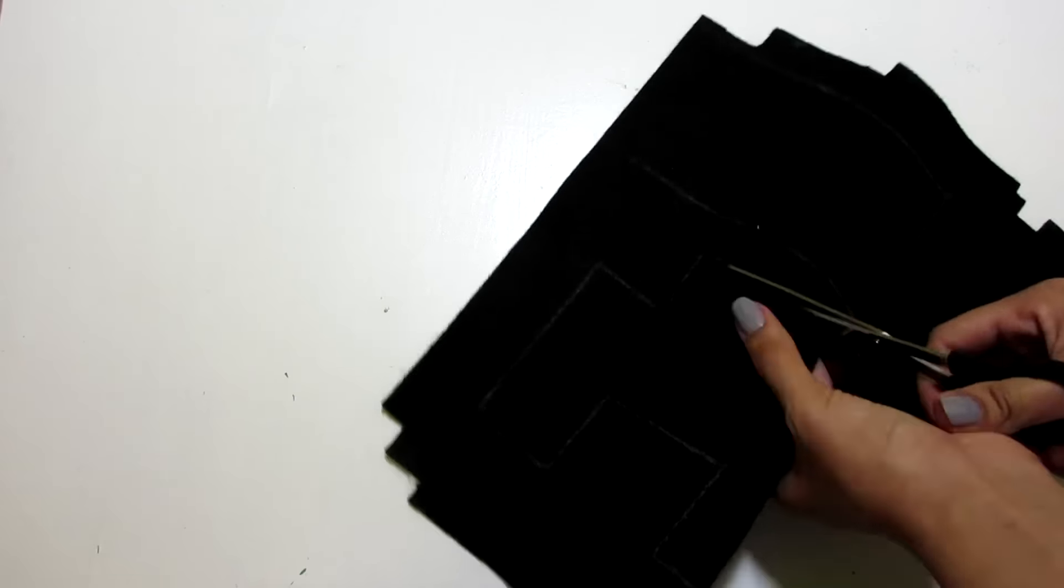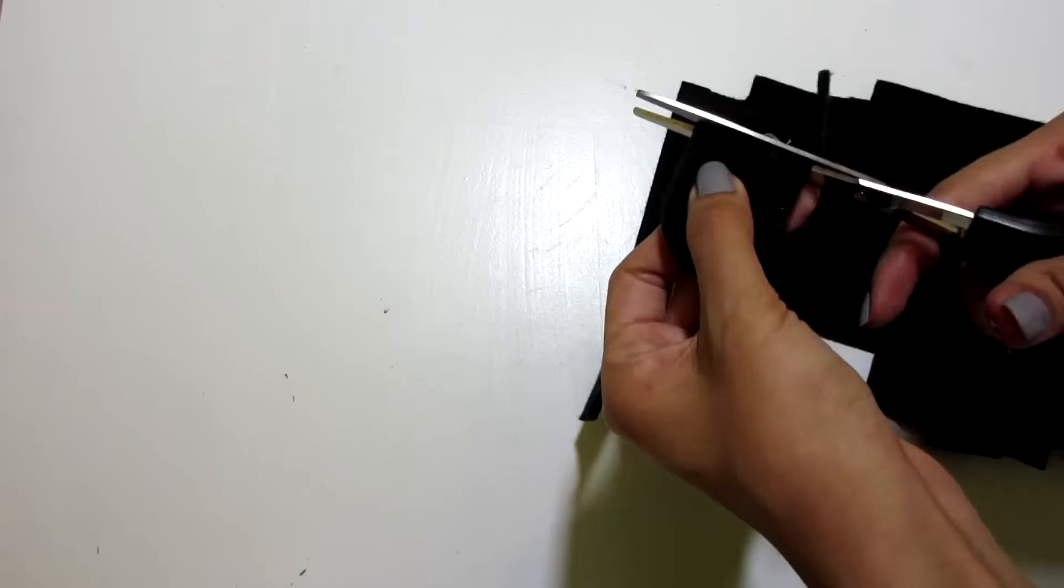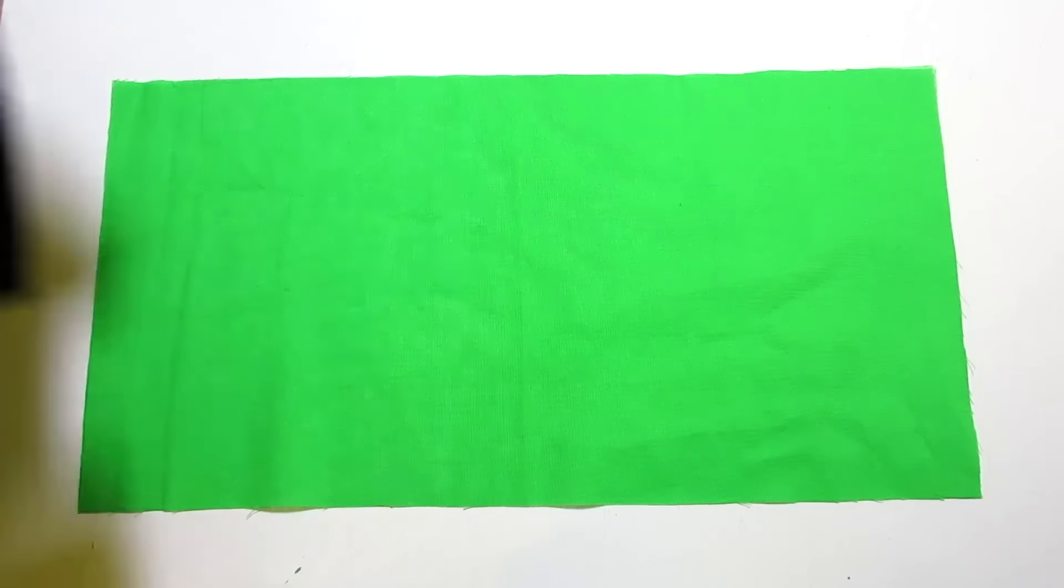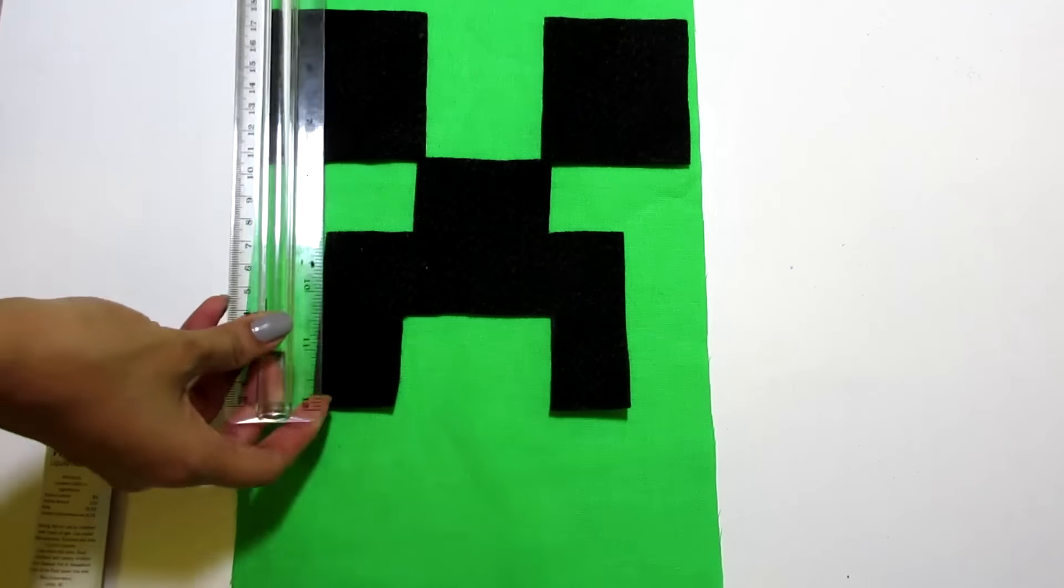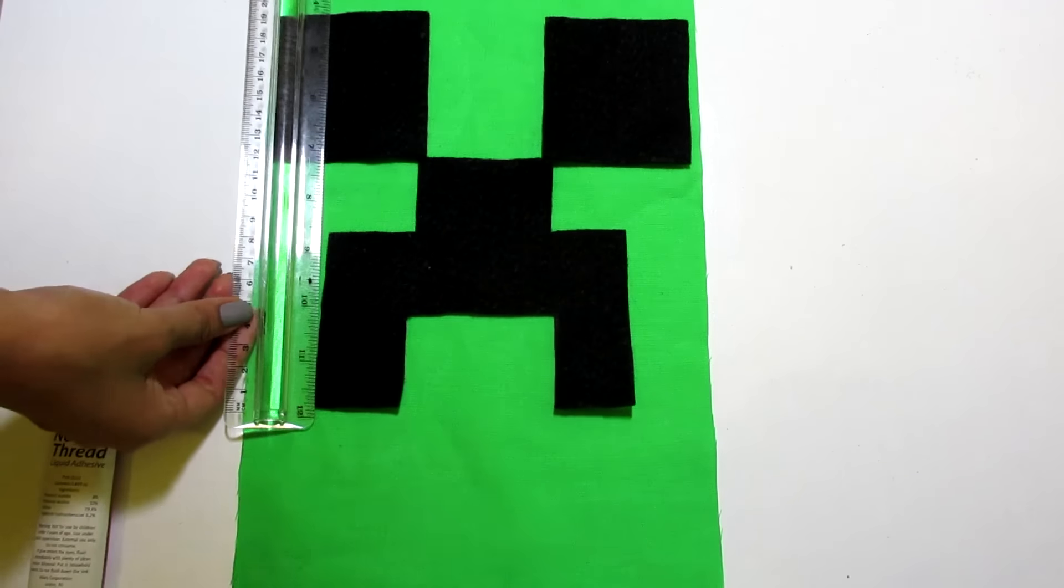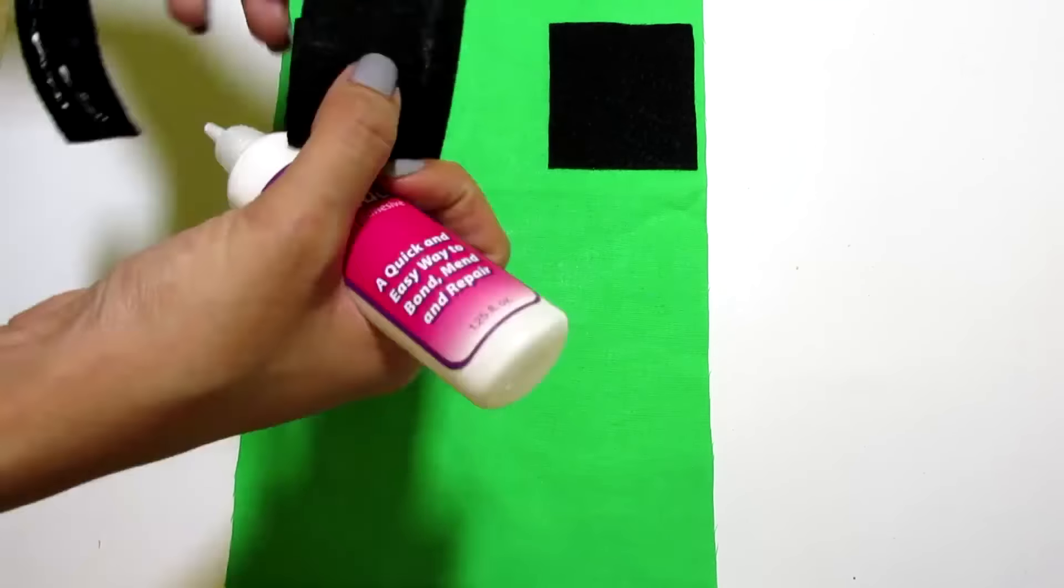So now that we have everything done, go ahead and cut out the creeper eyes and mouth. So once again, grab your banner, your cut out and your fabric glue. Find the center of your banner and place your creeper face. Once you've aligned everything, go ahead and glue the face to the banner.